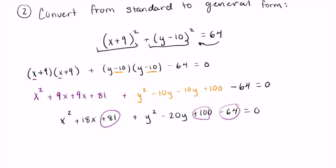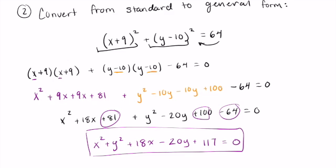And I can say x² + y² + 18x - 20y + 117 = 0. And that is standard form to general form. Very easy, very simple. Follow those steps and you'll never miss it.